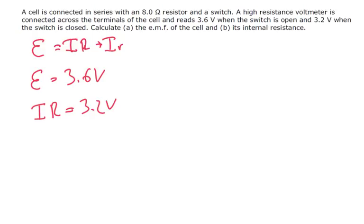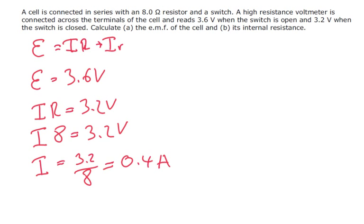We know the external resistance, so IR is 8. So let's substitute that in. So the current is going to equal 3.2 divided by 8, which gives us an answer of 0.4 amps.